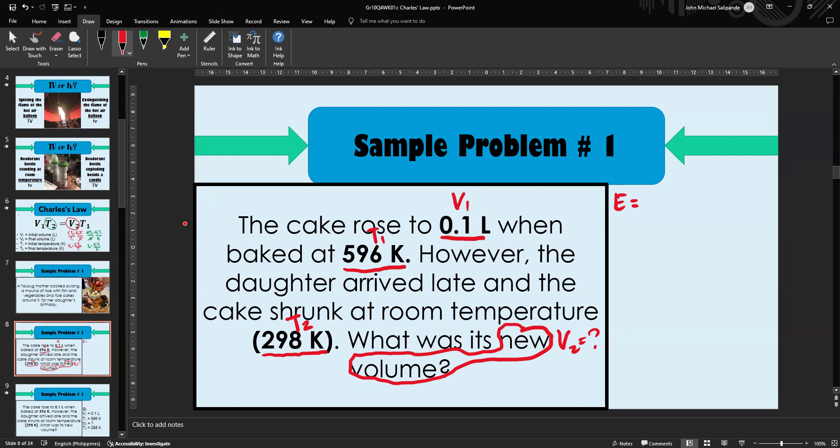To solve for V₂, the formula is V₁T₂ / T₁. Substituting the values: V₂ = 0.1 liter × 298 Kelvin / 596 Kelvin. Try substituting them in your scientific calculator. The answer or new volume will be 0.05 liters.